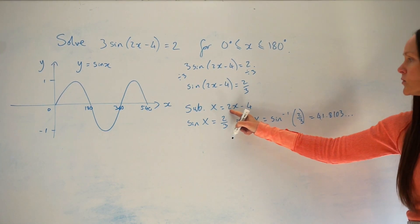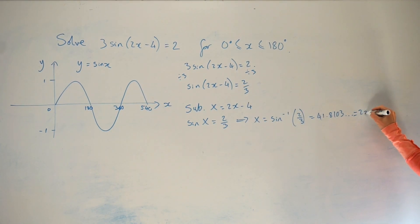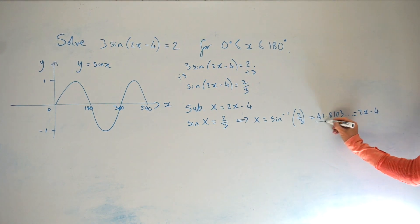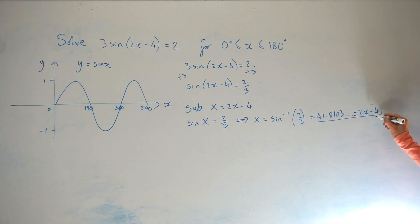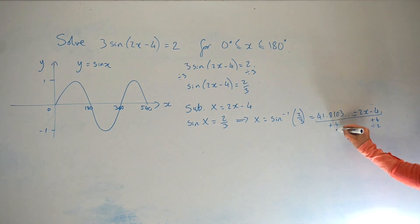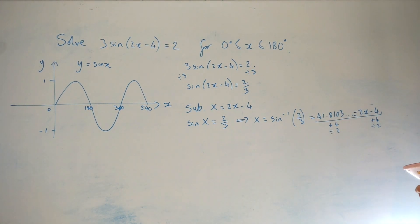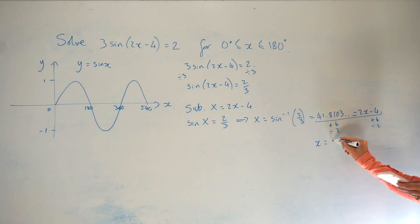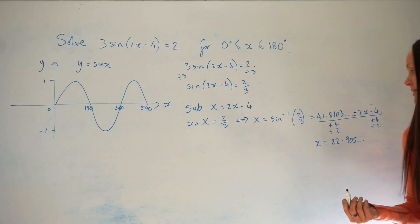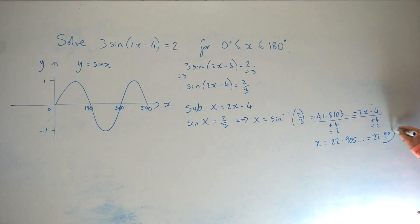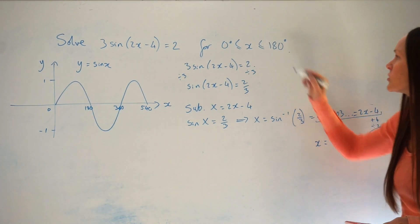Capital X is equal to 2x − 4, so this value equals 2x − 4. To solve for little x, we undo everything around x: the opposite of subtracting 4 is adding 4, and the opposite of multiplying by 2 is dividing by 2. So add 4 then divide by 2 to get x = 22.905..., which rounds to 22.9 degrees. That's the first solution, and it falls within our range of x values.